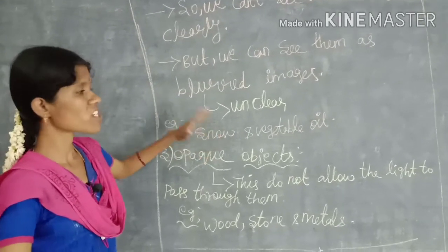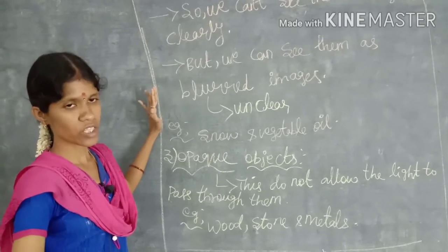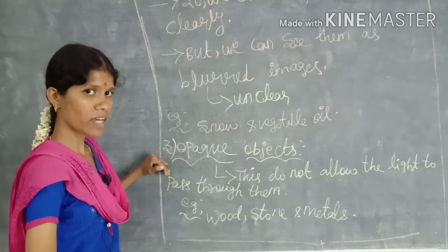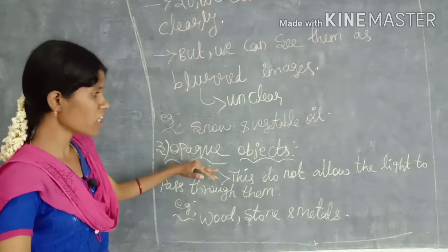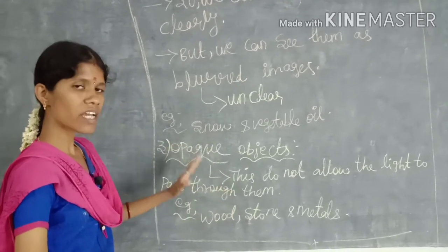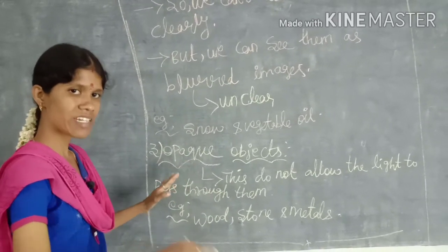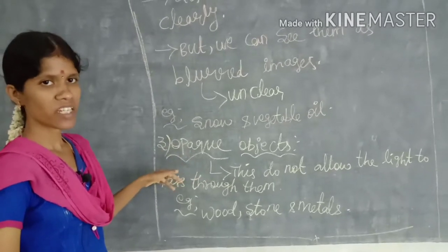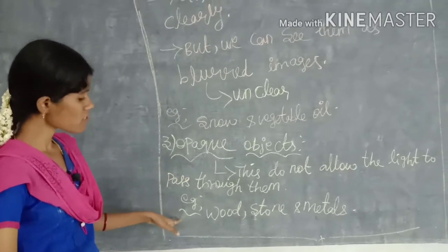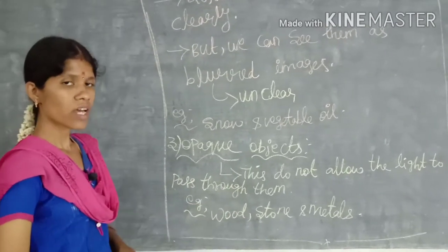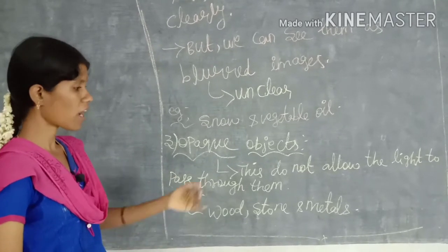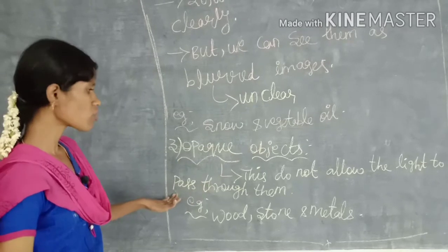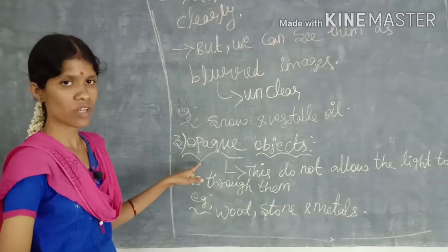Examples of translucent objects are snow and vegetable oil. The next topic is opaque objects. An opaque material does not allow light to pass through it at all — the light is completely stopped. Examples are wood, stone, and metals. If light passes toward wood, stone, or metal, the light will not appear on the other side of the surface. That is why it is called an opaque object. Thank you, students.